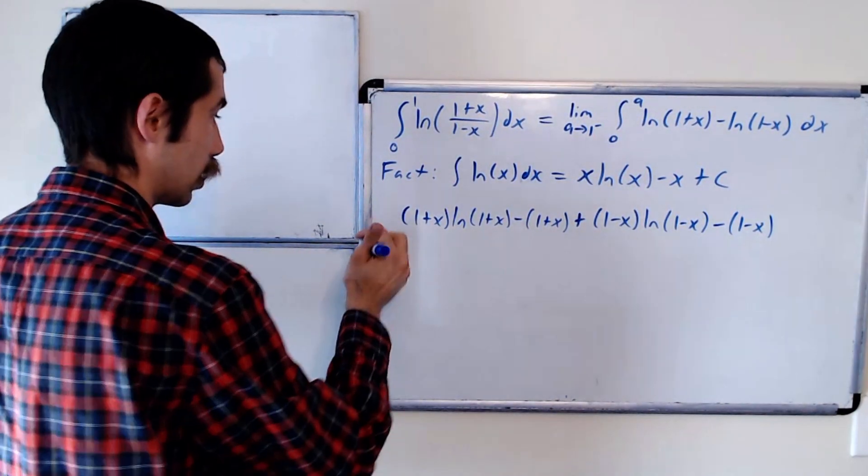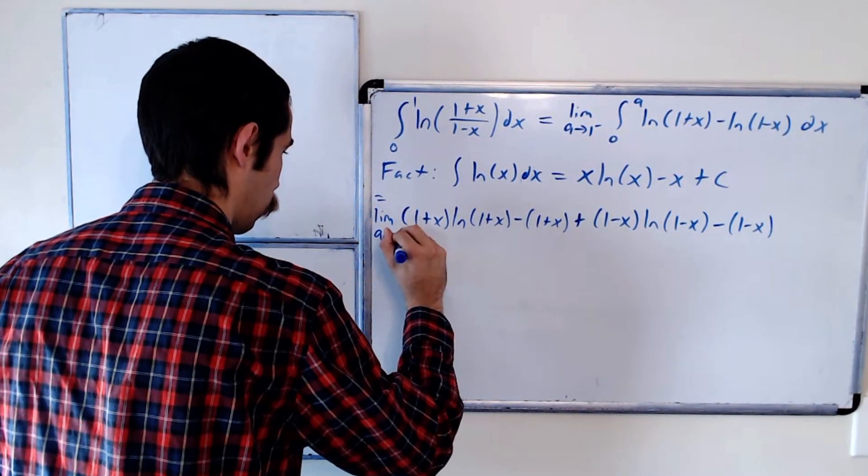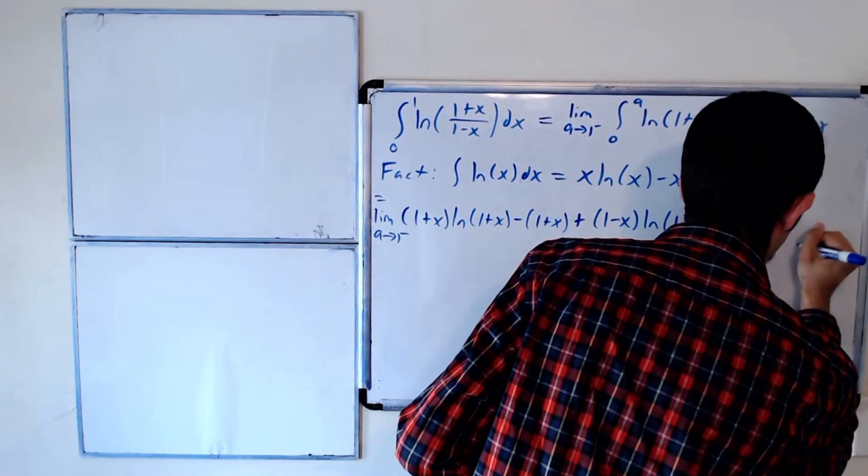And this is all the limit, as a goes to 1 from the left, of all of this evaluated at 0 and a.